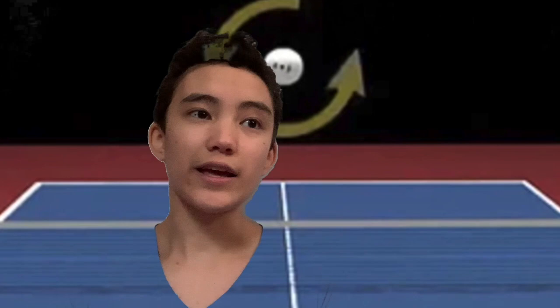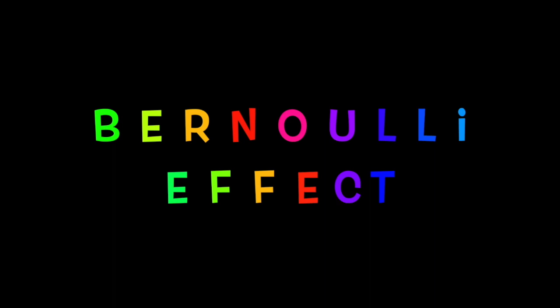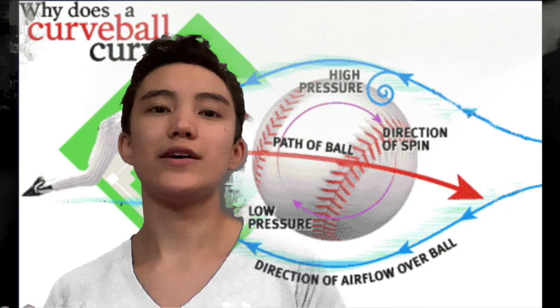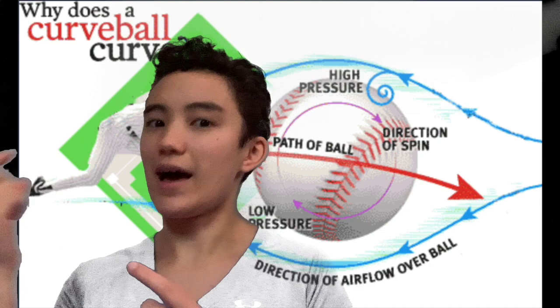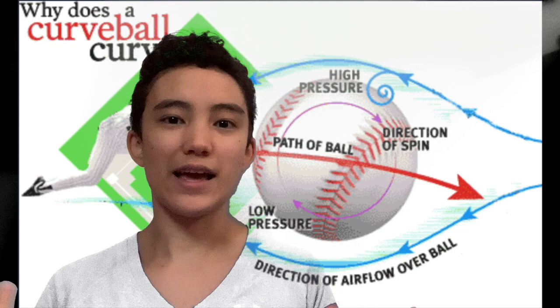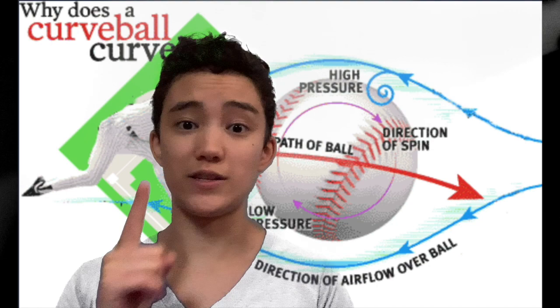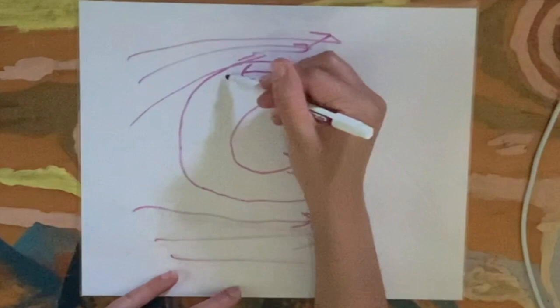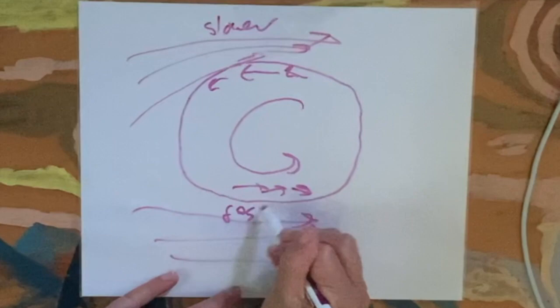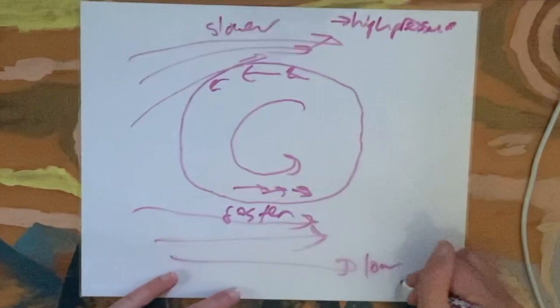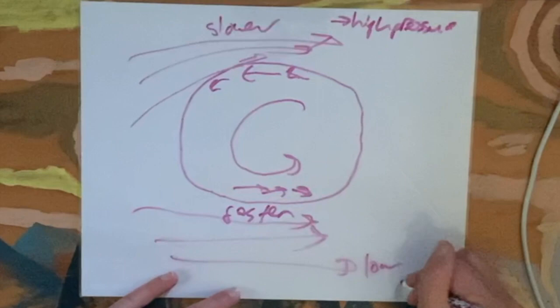We can also look at this using the Bernoulli effect: air moving faster has lower pressure than air moving slower. The air on one side of the ball moves with the spin, so it's motivated to move faster and has lower pressure. On the other side, the ball pushes against the air, trapping it and slowing it down, creating a buildup of slower air with higher pressure. The ball then wants to move from high pressure to low pressure, which is why it deflects in that direction.